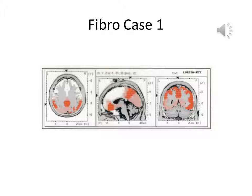Here is a Loretta map of another fibromyalgia case. Note the same location is activated as in the other maps, and includes the anterior cingulate, posterior cingulate, and parietal lobes.